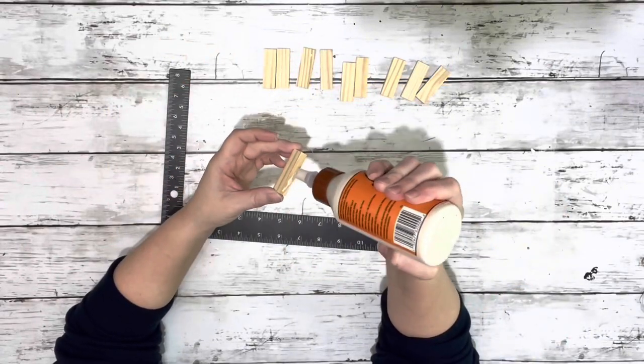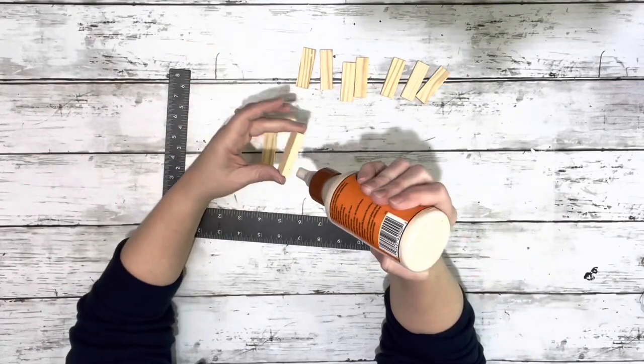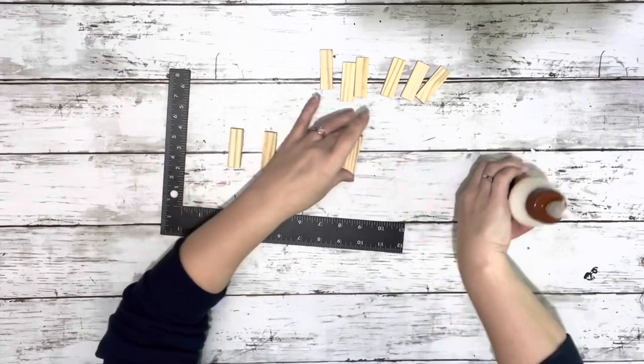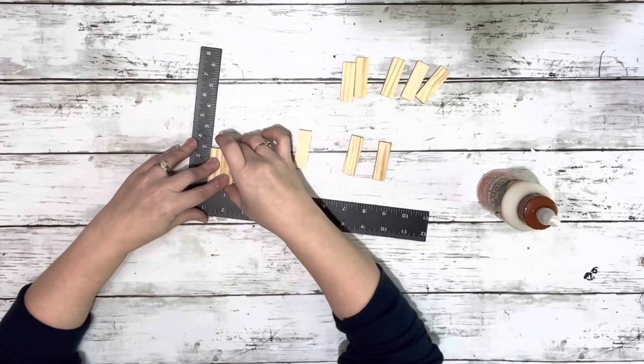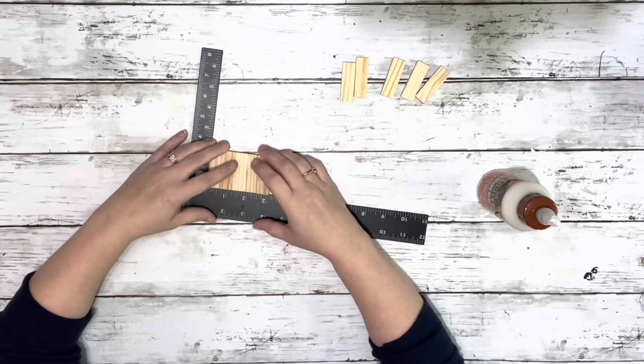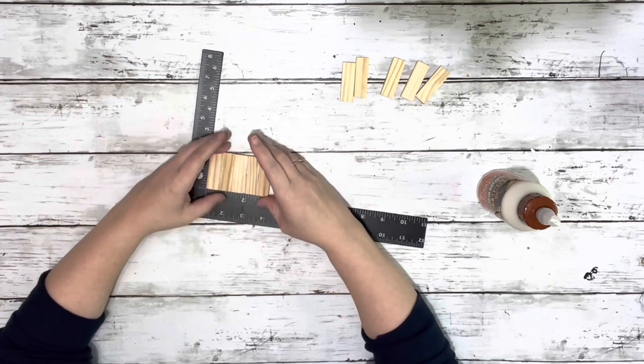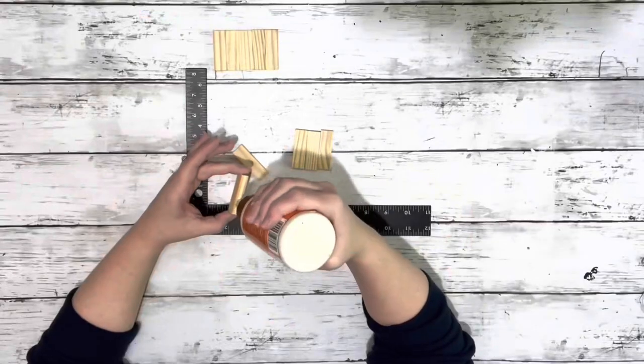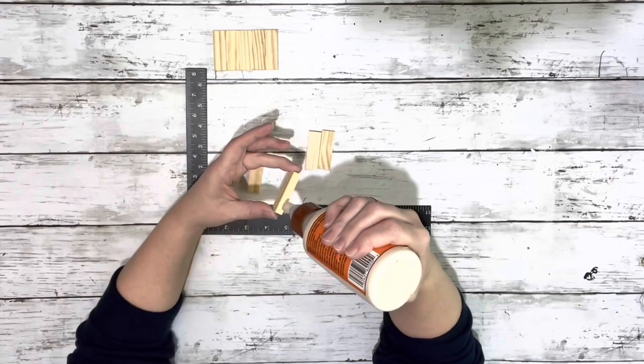First thing I did was took the tumbling tower blocks, I needed 10 of them, and glued five of them together, just putting some wood glue on the longer edge and then gluing them side to side and then setting them to the side. You'll need two sets of those.